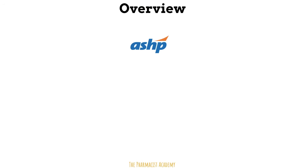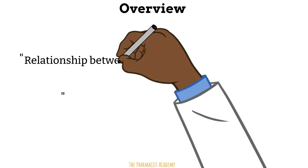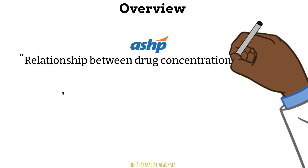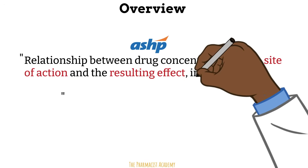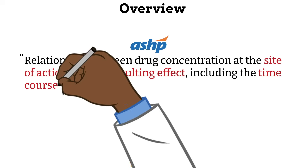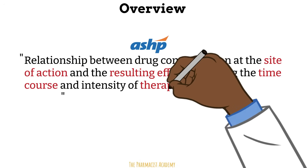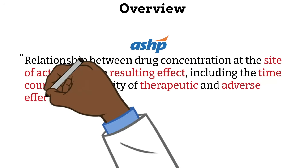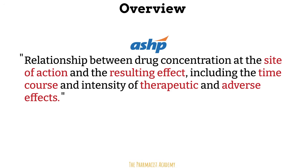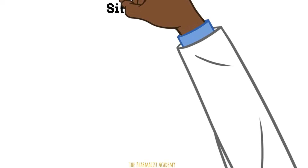According to ASHP, pharmacodynamics refers to the relationship between drug concentration at the site of action and the results and effects, including the time course and the intensity of the therapeutic and adverse effects. So first, let's take a look at the site of action.